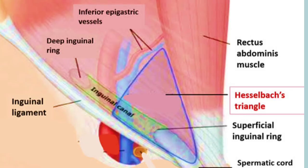Due to its significance in differentiating between direct and indirect inguinal hernia, this Hesselbach's triangle becomes very important for undergraduates, postgraduates, and in the context of hernia surgery.